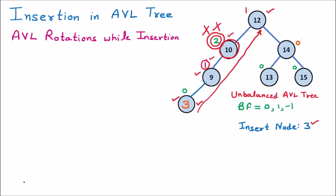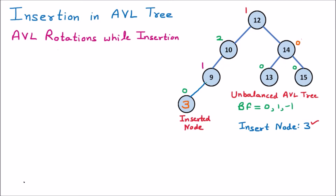We are discussing AVL rotations during insertion — the rotations we have to perform while inserting a node. To apply these rotations, first we have to find the inserted node, which is 3. From there we go toward the root node, which is 12, and check all the nodes on that path which are not following the balancing criteria.